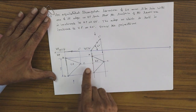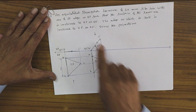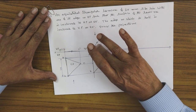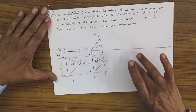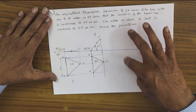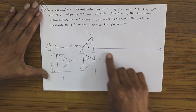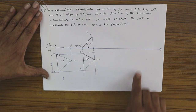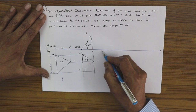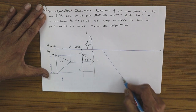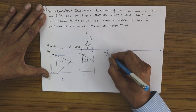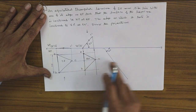The problem clearly states the standing side is inclined to VP at 60 degrees. Following the standard rule — surface first step, side second step — redraw the apparent triangle at an angle of 60 degrees, either rightward or leftward. Leave a small gap and draw a line at an angle of 60 degrees.